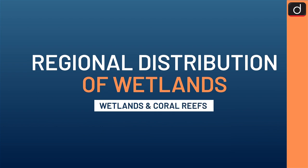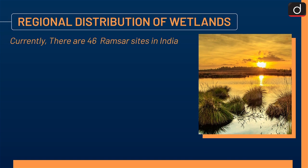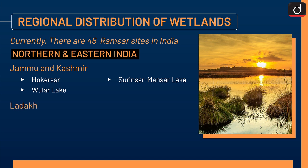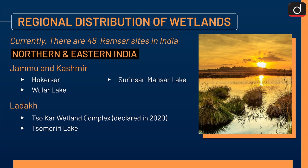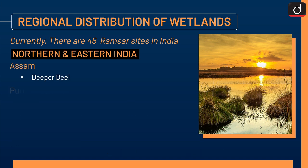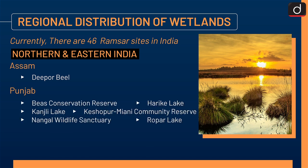Now let's discuss the regional distribution of wetlands. Currently there are 46 Ramsar sites in India. In northern and eastern India — Jammu & Kashmir: Hokersar, Surinsar-Mansar Lake, and Wular Lake. In Ladakh: Sokar Wetland Complex (declared 2020) and Tsomoriri Lake. In Himachal Pradesh: Chandertal Wetland, Pong Dam Lake, and Renuka Wetland. In Assam: Deepor Beel. In Punjab: Beas Conservation Reserve, Harike Lake, Kanjali Lake, Keshopur-Miani Community Reserve, Nangal Wildlife Sanctuary, and Ropar Lake.